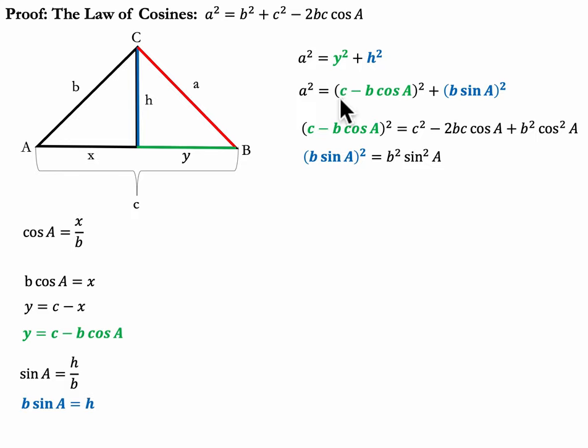All right. Let's just verify what happened here. I did c times itself is c squared. And then c times negative b cosine A twice, negative 2bc cosine A. And then b cosine A times itself. So it's b squared and cosine squared A. That's the distributive property. If that's not working out for you, let me know, and I'll show you in detail. B sine A squared, that's just going to be b squared times sine squared A.